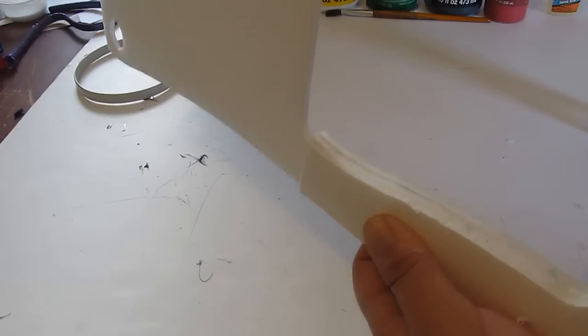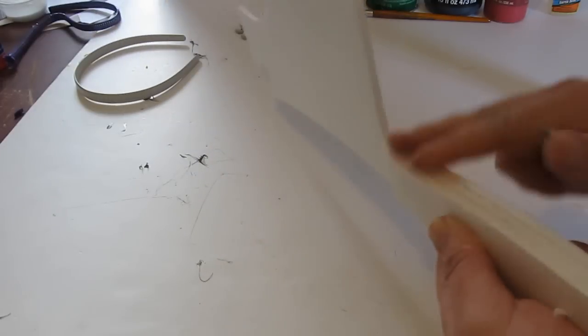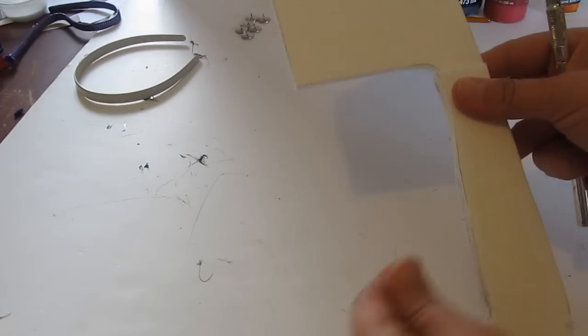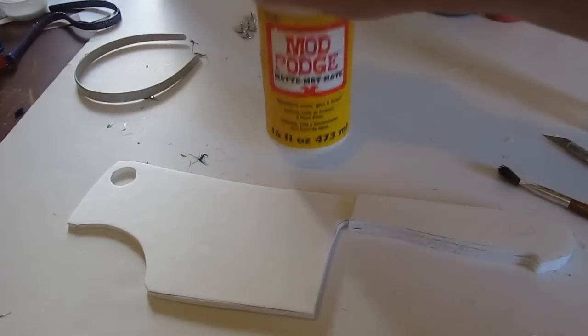And then trim it all. Once they're glued and the glue is set, trim them all to look nice. And you can use a knife, you can use some sandpaper, make it nice and flat so it looks good.